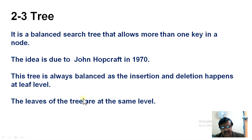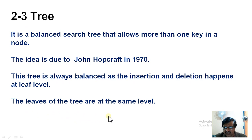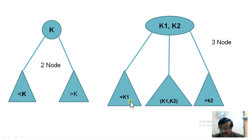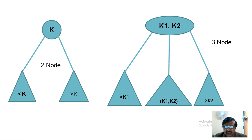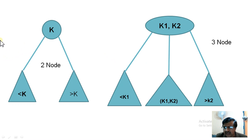The idea is due to John Hopcroft in 1970. The tree is always balanced as insertion and deletion happen at the leaf level. A very important property of 2-3 trees: the leaves are always at the same level. The name comes from the fact that a 2-3 tree involves either a 2-node, a 3-node, or a combination of both.